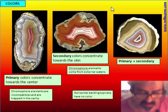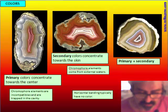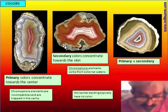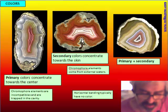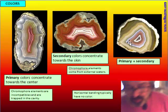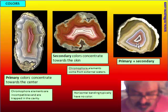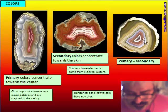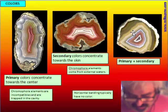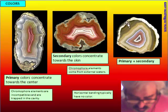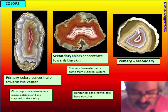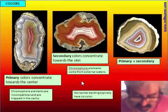Secondary color arrived after the solidifying of the agate by circulation of water in the soil. All secondary colors are found in the outer edge of the agate and the center is left white. There is the possibility that secondary color is added to an agate that already has primary color. Typically, horizontal banding has no color.